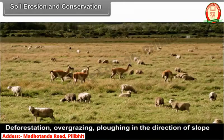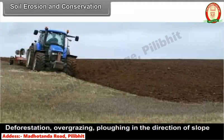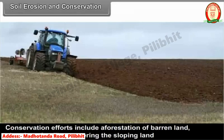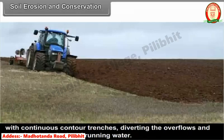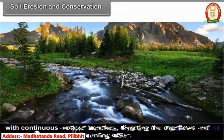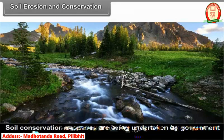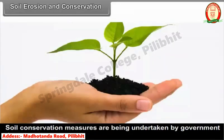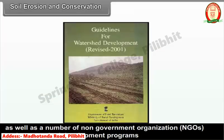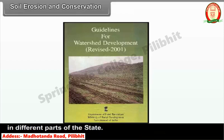Deforestation, overgrazing, and ploughing in the direction of slope are some of the factors that aggravate the problem of soil erosion. Conservation efforts include afforestation of barren land, plugging of gullies, covering the sloping land with continuous contour trenches, and diverting overflows and reducing the velocity of running water. Soil conservation measures are being undertaken by government departments as well as NGOs under watershed development programs in different parts of the state.